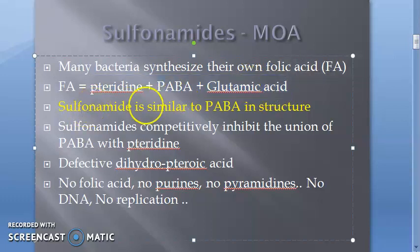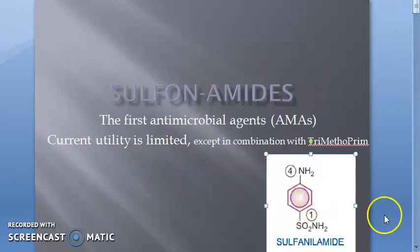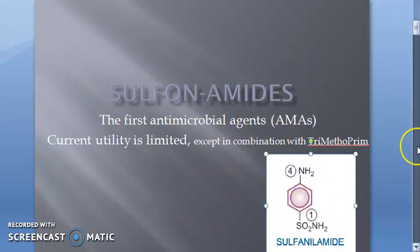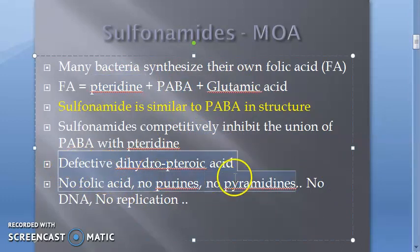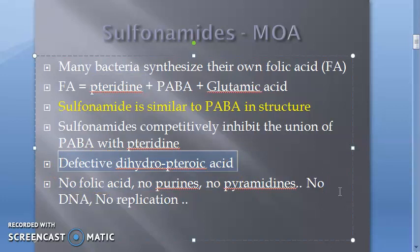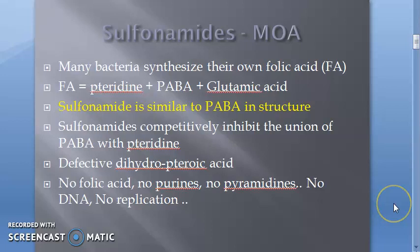The sulfonamide is very similar to PABA in its structure — look at the structure here, it is very similar to PABA. So what happens is the sulfonamide will combine with pteridine and give a defective dihydropteroic acid. As a result, the bacteria cannot make folic acid.